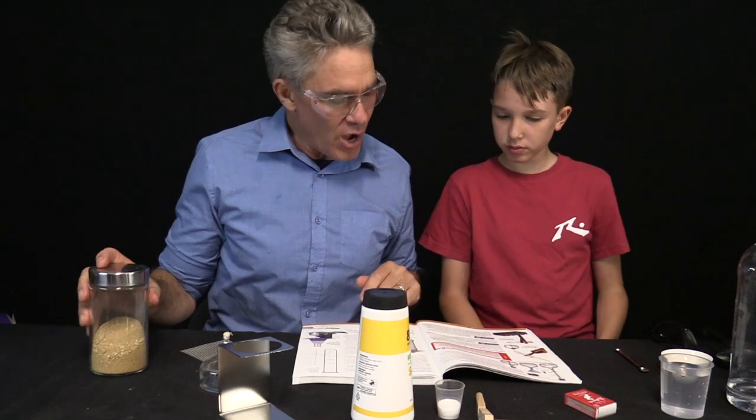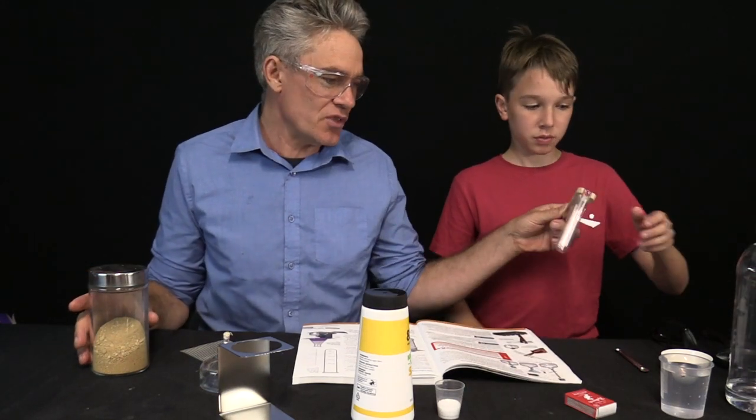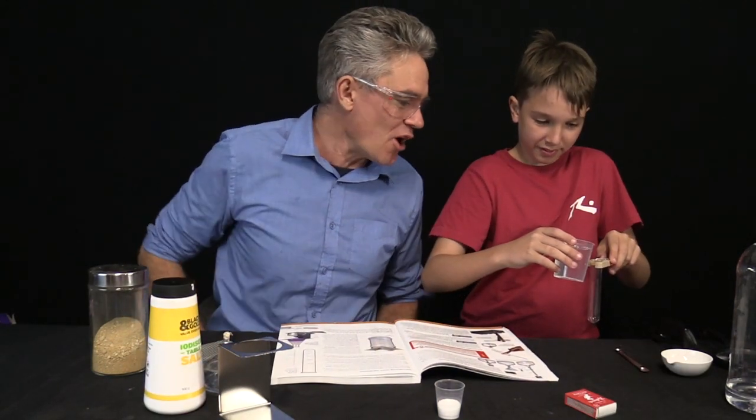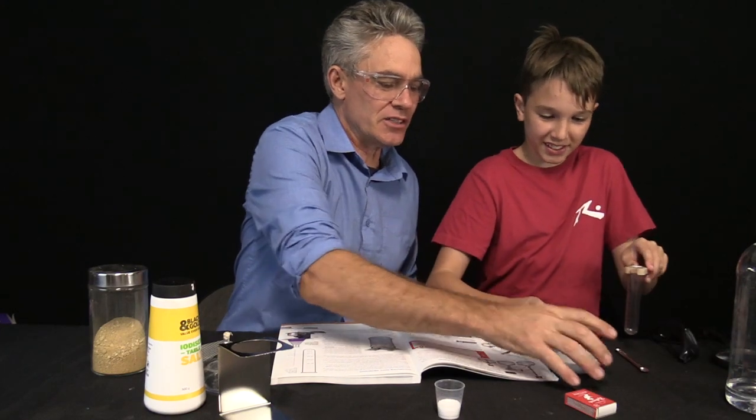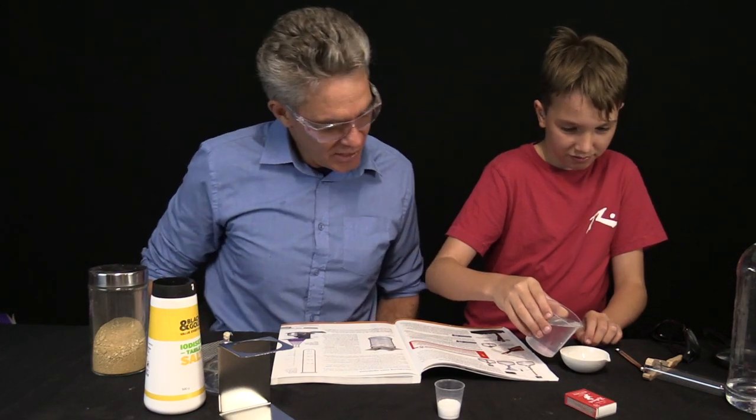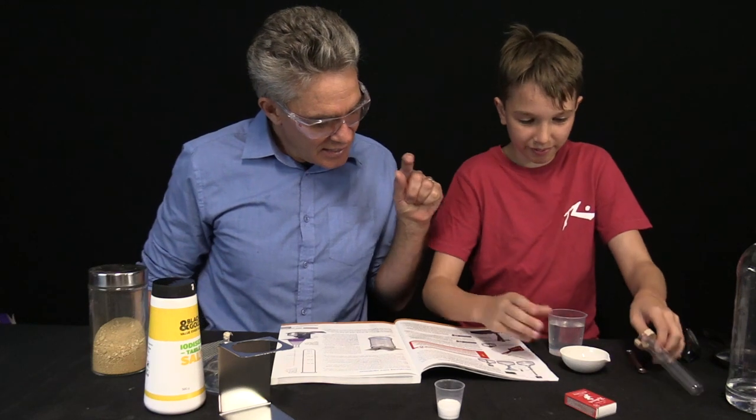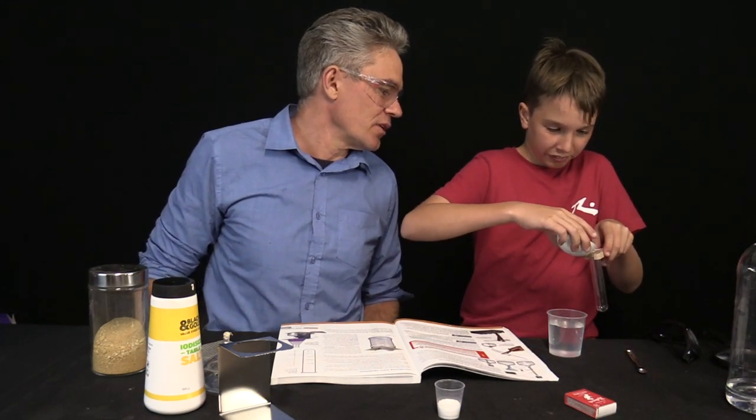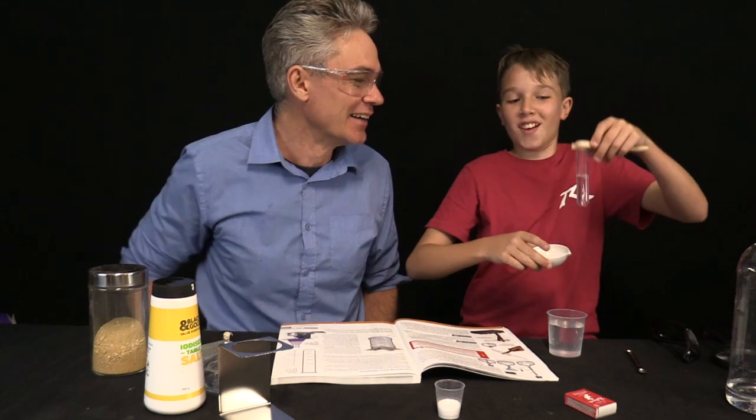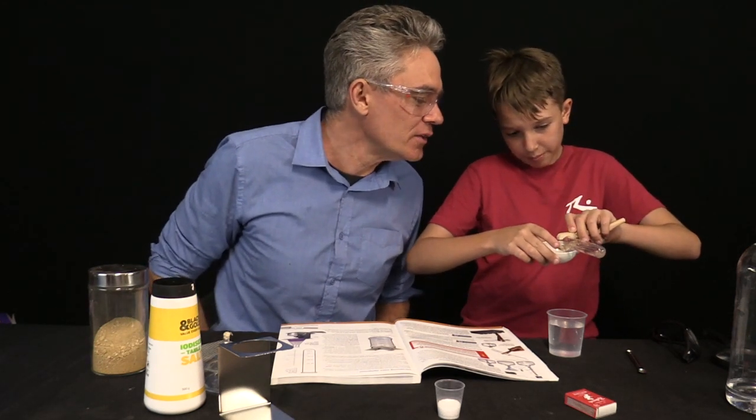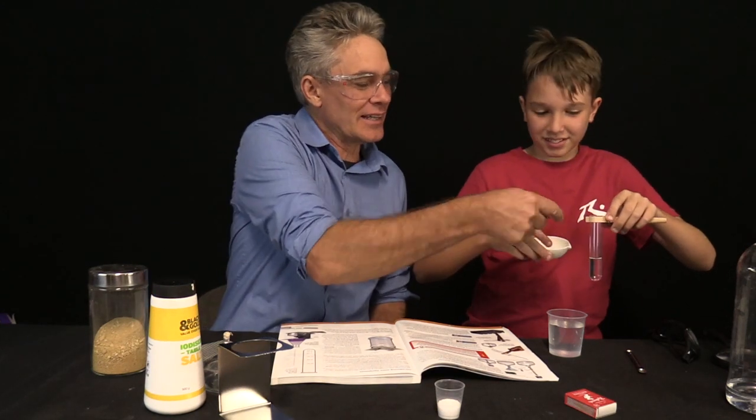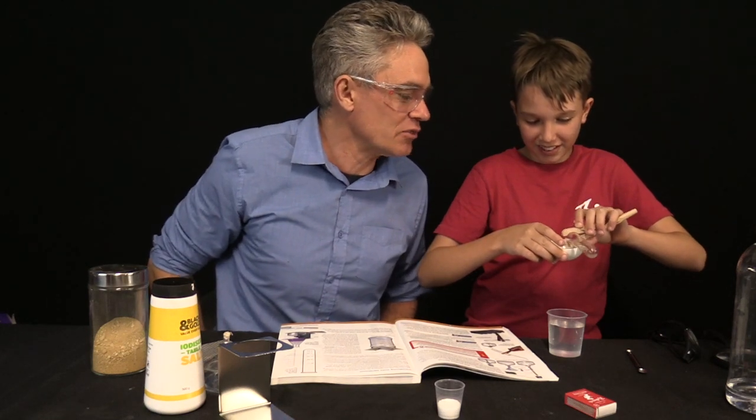The first thing it says is put about five mil of water into this test tube. So Sam's got the test tube and he's going to put about five mil of water. Maybe transfer it to the evaporating dish so that you've got a little nozzle. You need to pour in about two centimeters into the test tube. That's about five centimeters, that's a bit too much. That's about two centimeters or five mil.